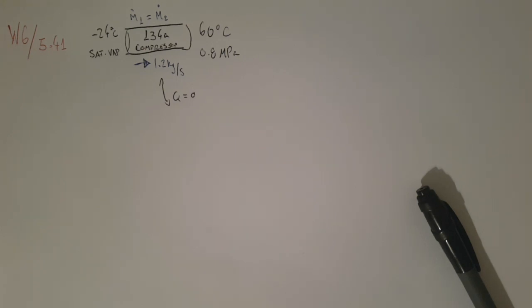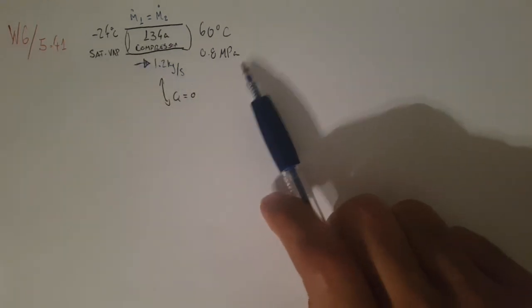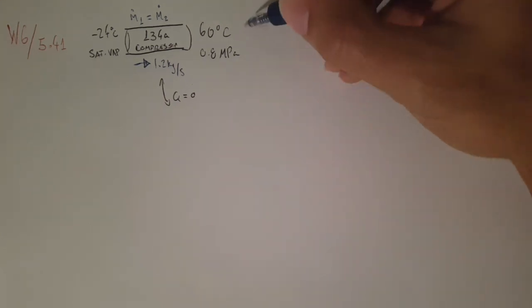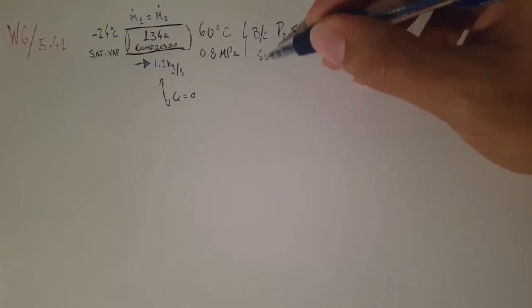All the changes are due to the work of the compressor, which is what we're to determine. The first thing we do: if this one is defined as saturated vapor, that's easy. Second, we look at the tables. At 60 celsius, we'll see the saturated pressure is smaller. Because P2 is greater than P_sat, it's a superheated fluid.